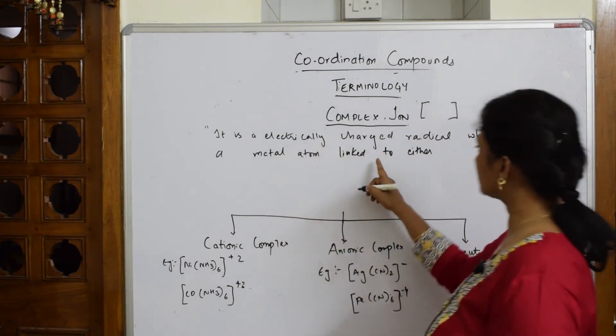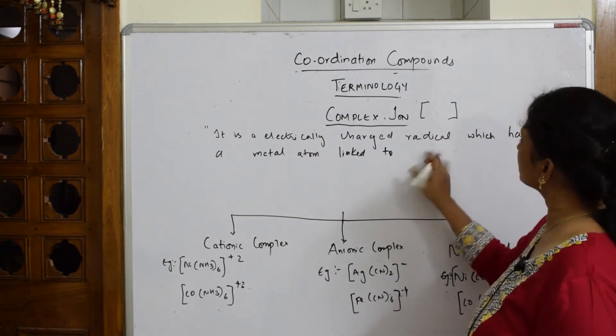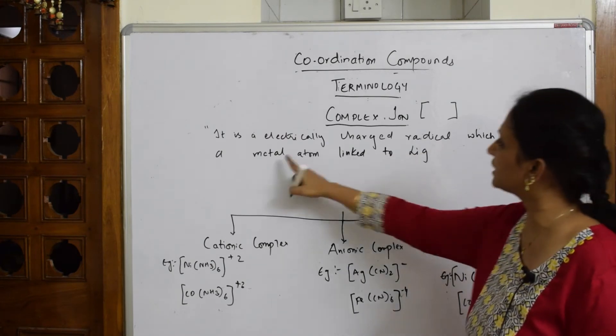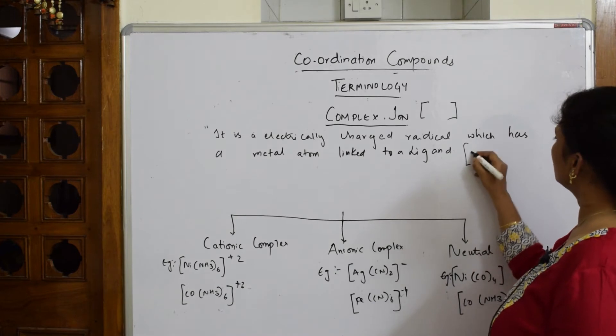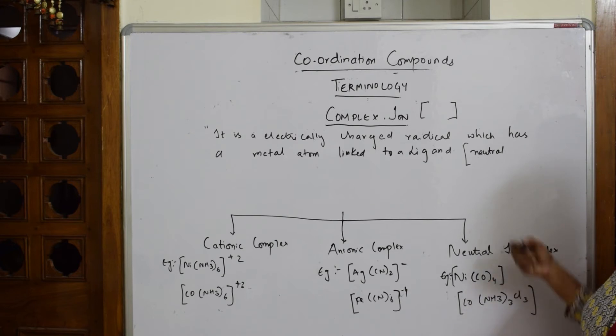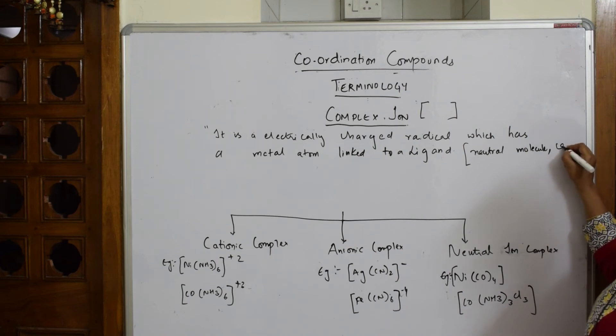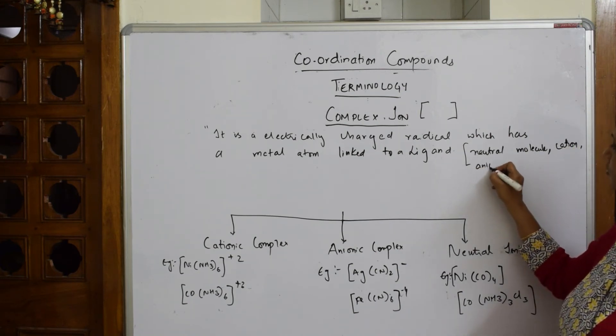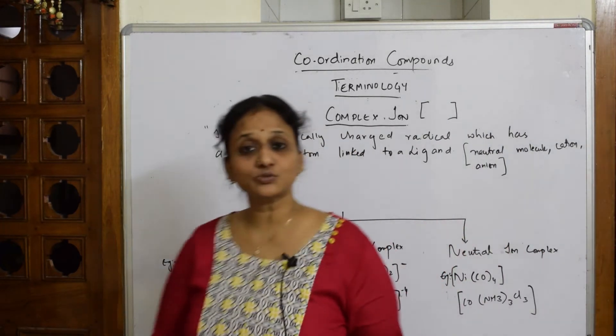A ligand can be a neutral molecule like ammonia, CO, or water. Or the ligand can be a cation (positive ion) or an anion (negative ion). These are the three combinations. But how are these two joined?